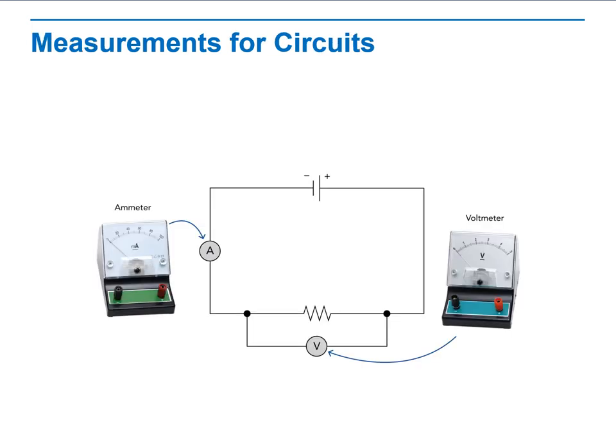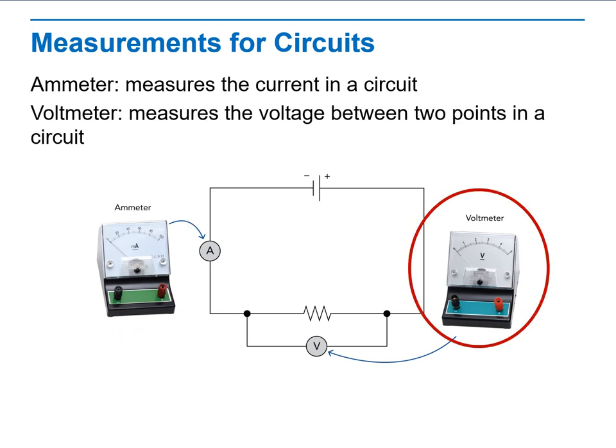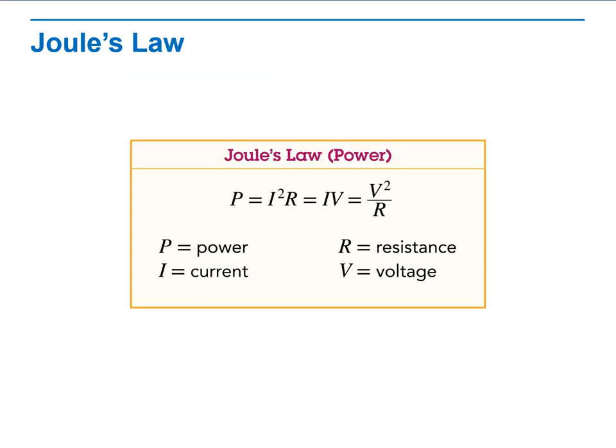Then we will do some measurements for circuits. There are many tools that can be used to measure different aspects of a circuit. We will see what is an ammeter, what's a voltmeter. Why can an ammeter be connected at a single point, while the voltmeter must be connected at two points? We will discuss that in detail here, as you can see.